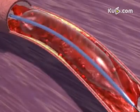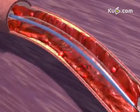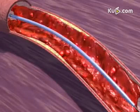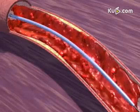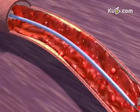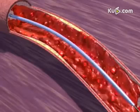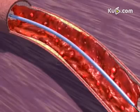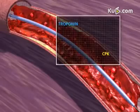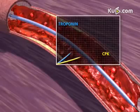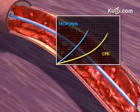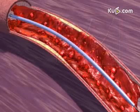Balloon dilatation is first performed. Dissolution of the thrombus results in distal microembolization. Occlusion of the distal microvascular circulation increases myocardial injury, which may be reflected in further increased myocardial enzyme levels and additional myocardial damage.